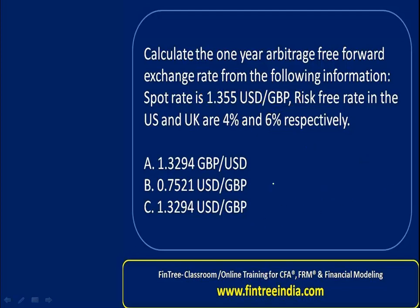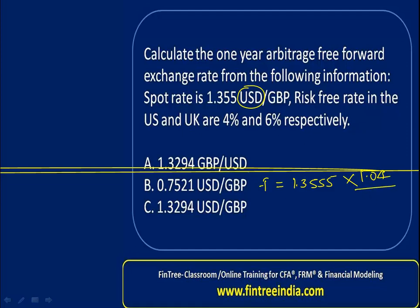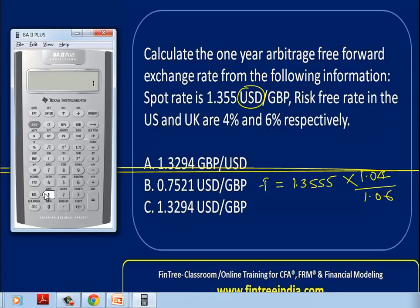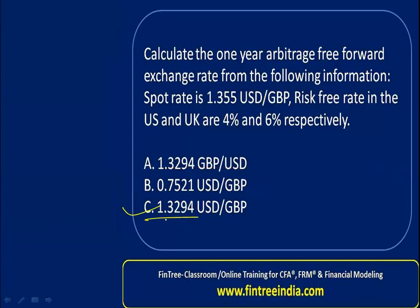Rewriting the equation: forward is equal to spot, which is 1.3555, multiplied by the rate in the numerator — US rate of 1.04 — divided by the rate in the denominator — UK rate of 1.06. Solving: 1.3555 × 1.04 ÷ 1.06 gives us 1.3299. That means the correct answer is option C.